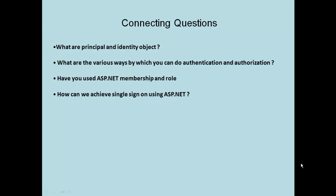The first connecting question is the importance of principal and identity objects. The second is how you have implemented authentication and authorization in your project — whether you used Forms Authentication, Windows Authentication, or Passport Authentication, and how you implemented it, such as changes made to the config file. The third question is related to membership and roles, and how they help expedite your security development process. The final one, more for senior architects and developers, is whether you have worked on single sign-on and how you implemented it in ASP.NET.